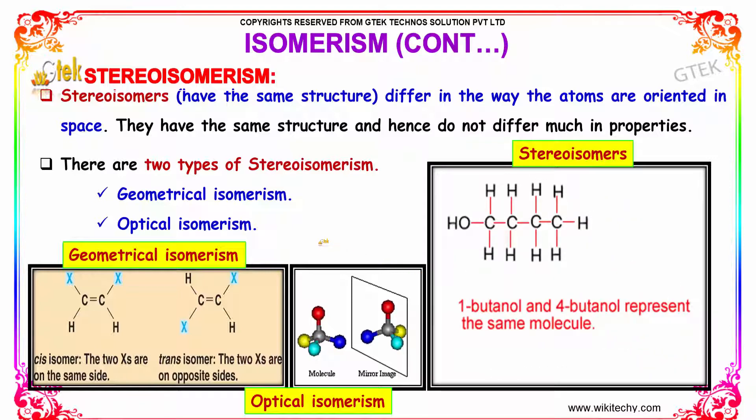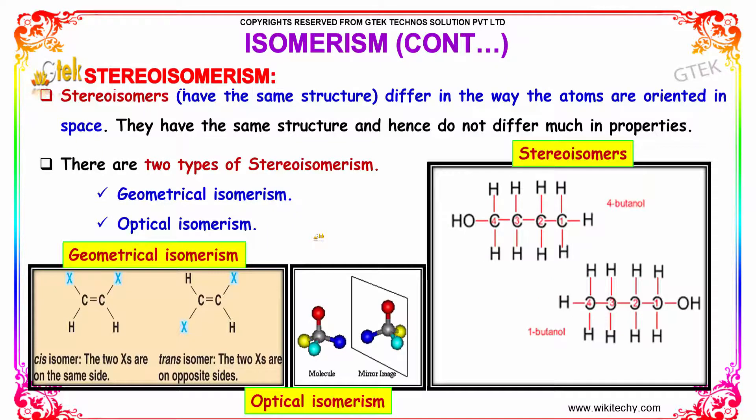There are mostly two types, namely geometrical isomerism and optical isomerism.